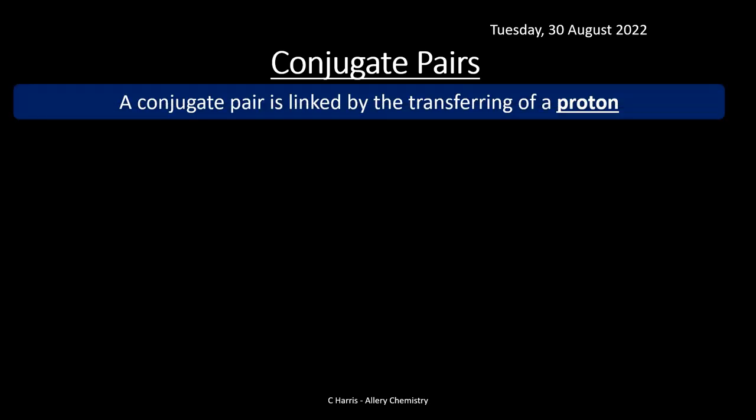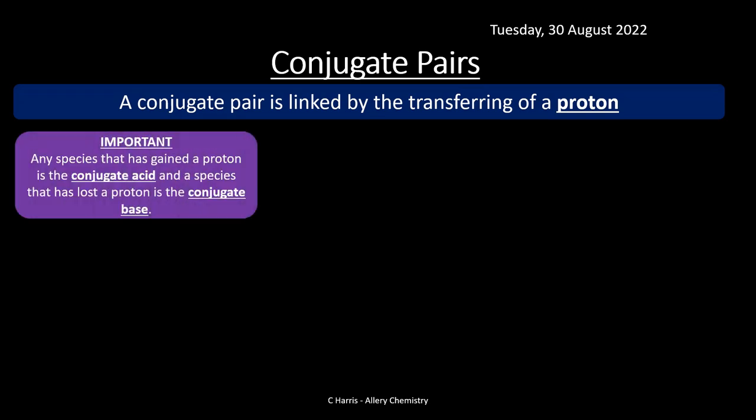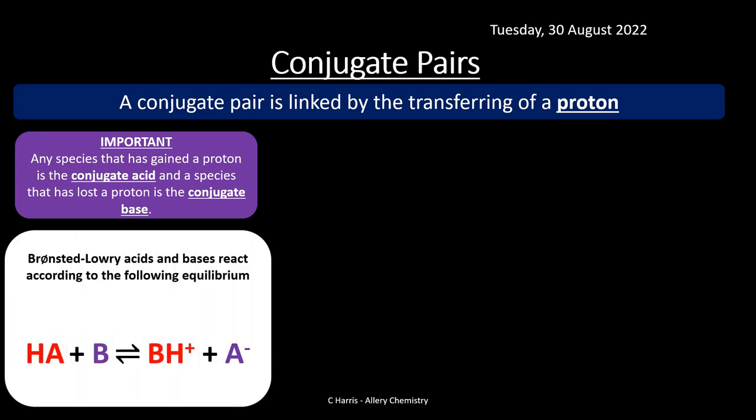There's going to be a lot of this kind of content brought in here. One of the topics was about acids and bases and looking at conjugate pairs. Conjugate pairs are basically linked by the transferring of a proton — this is related to acids and bases. Any species that has gained a proton is the conjugate acid, and a species that has lost a proton is a conjugate base.